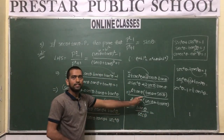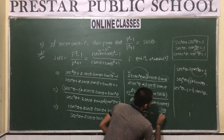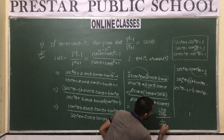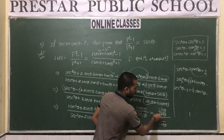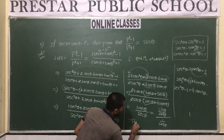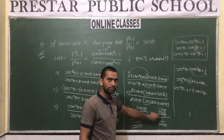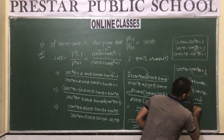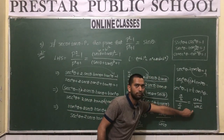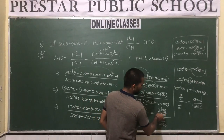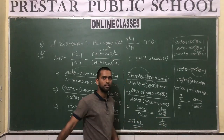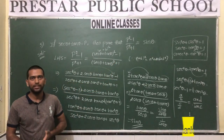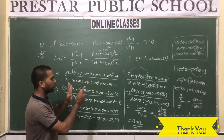Converting tanθ/secθ in terms of sine and cos: tanθ = sinθ/cosθ and secθ = 1/cosθ. So (sinθ/cosθ) / (1/cosθ) = sinθ. The cosθ terms cancel, and the remaining answer is sinθ. This is the required answer. Hence proved.